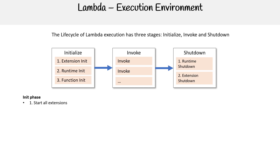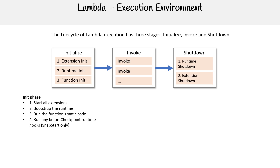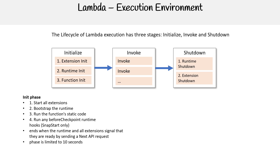For the initialization phase, we're starting all extensions, bootstrapping the runtime, running the function static code, and running any before-checkpoint runtime hooks — for SnapStart only. This stage is going to end when the runtime and all extensions signal that they are ready by sending the next API request. The phase is limited to 10 seconds; if it can't finish in 10 seconds, it's going to retry from scratch.